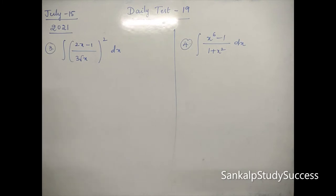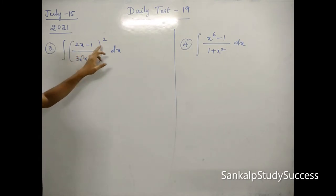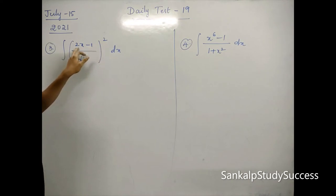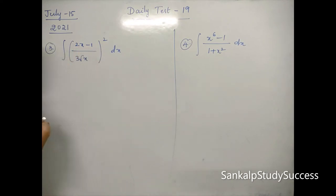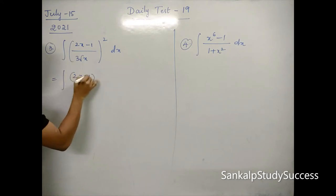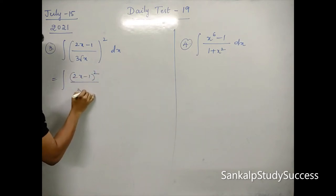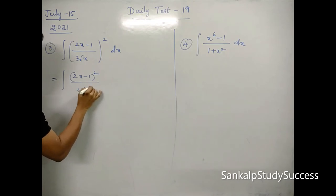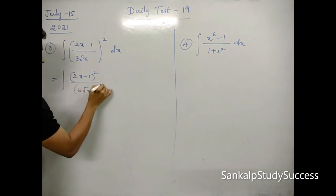Look at question number 3: Integral of (2x - 1)² divided by (3√x)² dx. We expand (2x - 1)² using the (a - b)² formula: 4x² - 4x + 1. The denominator is (3√x)² = 9x. So we have (4x² - 4x + 1) divided by 9x, dx.